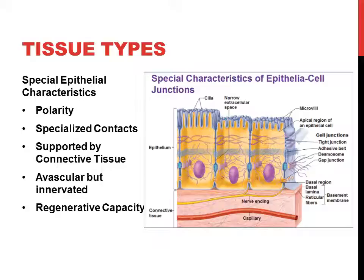Let's talk about some special characteristics of epithelial tissue. The first is polarity — don't let that confuse you. We talked about polarity last week in cells and described it as a cell or membrane having electrical poles, one side positive and one side negative.